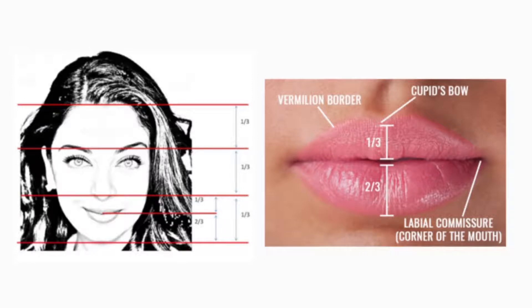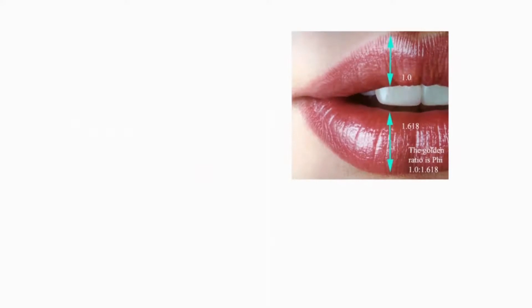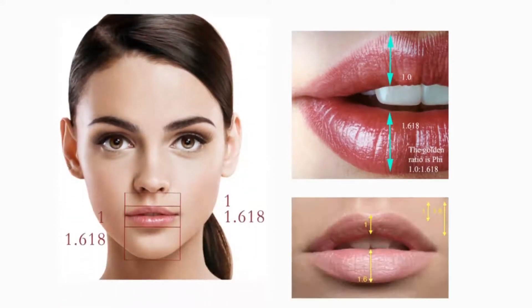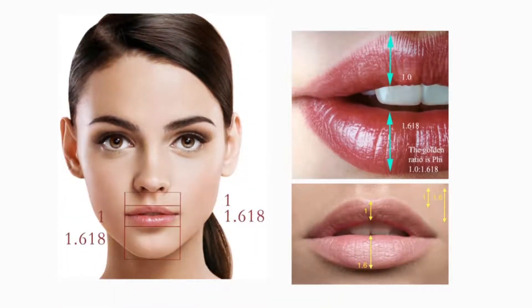two-thirds lower lip, and this balance gives it a beautiful appearance. Also, the divine ratio, or the golden proportion — the phi ratio, which is 1 to 1.618 — means that if the upper lip is 1, the lower lip should be 1.618 to give it that balanced and harmonious appearance.